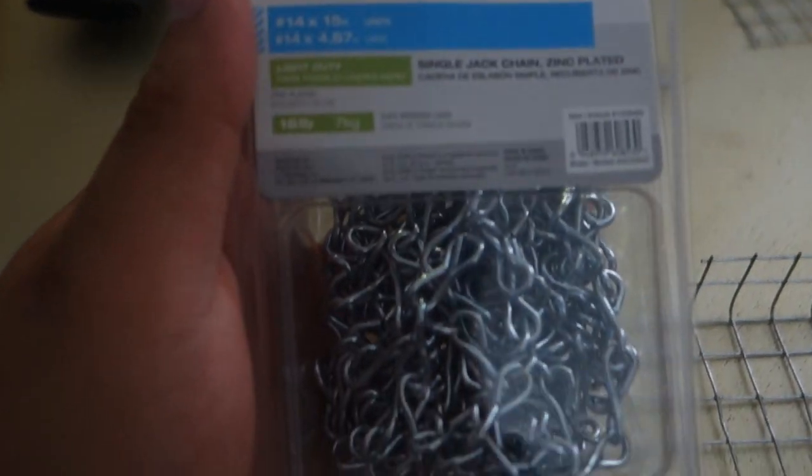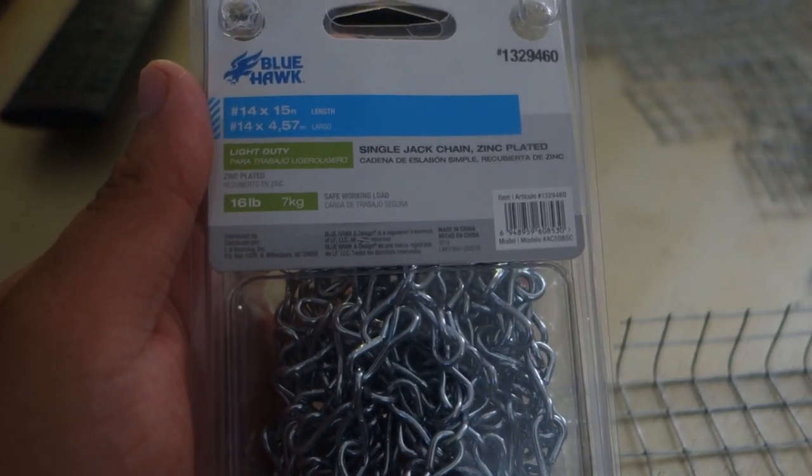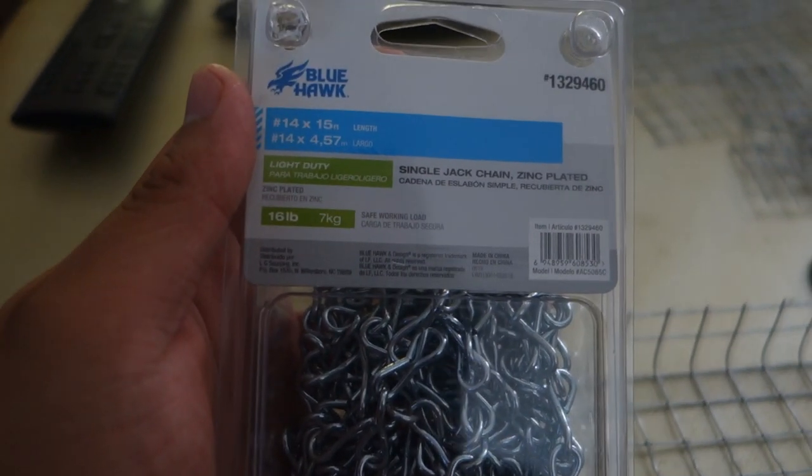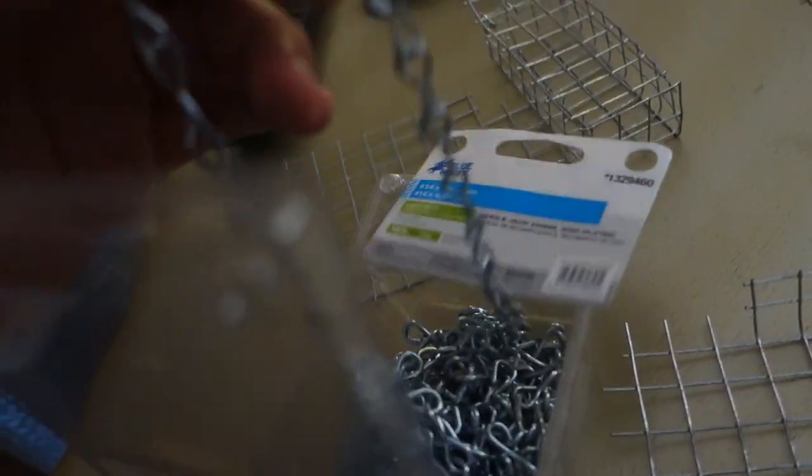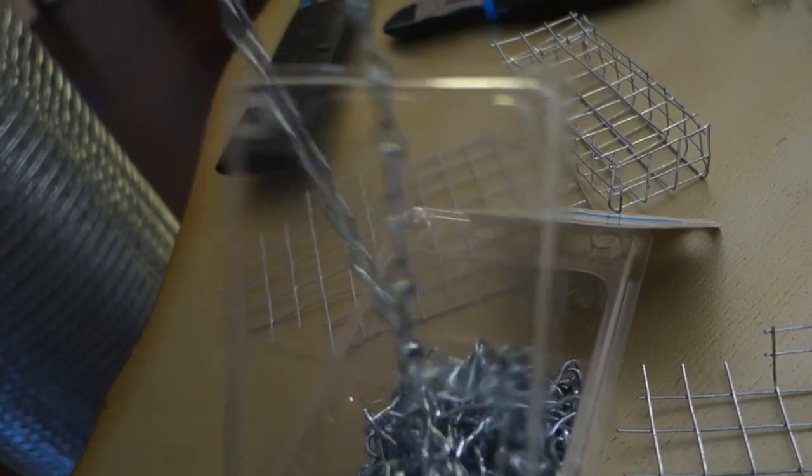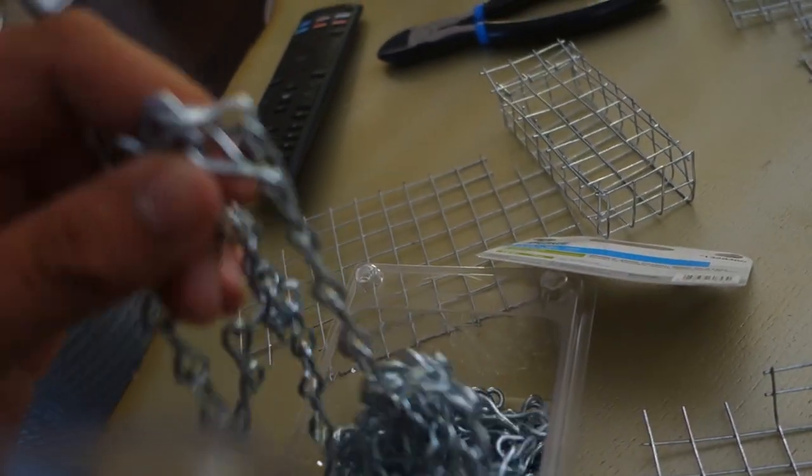To make the closures, you need a single jack chain. I have 14. I think Matt uses 16. And then you need hair ties. I believe you also use paper clips. But I found this at Home Depot or Lowe's.